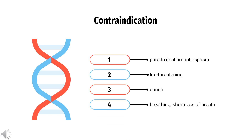Who cannot use beclomethasone? This medicine may cause paradoxical bronchospasm, which means your breathing or wheezing will get worse. This may be life-threatening. Check with your doctor right away if you or your child are having a cough, difficulty with breathing, shortness of breath, or wheezing after using this medicine.